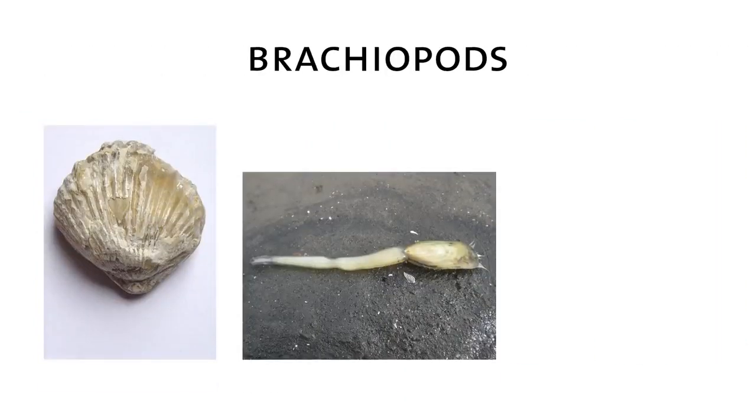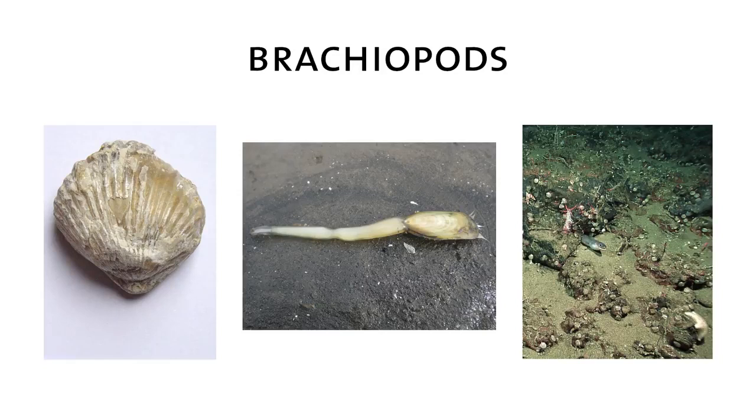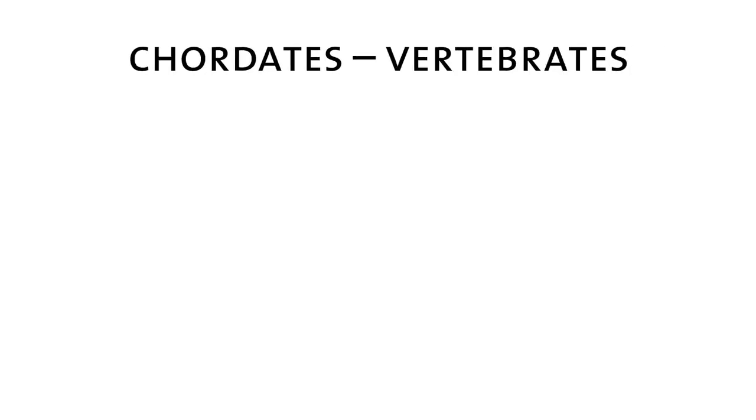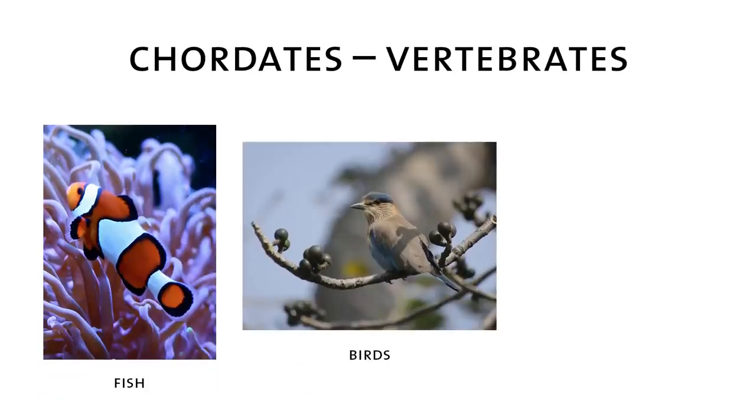There are brachiopods. Brachiopods look superficially like clams, but they're actually very distantly related and their internal anatomy is completely different. But there they are in the Cambrian, and they're still around today. We also even have some early chordates. Chordates is the group that includes vertebrates, things like fish and birds and mammals.